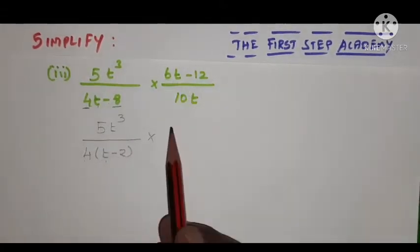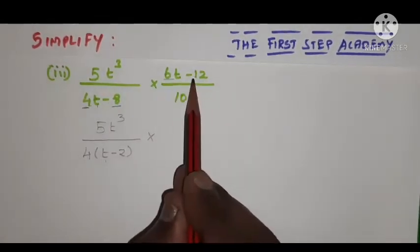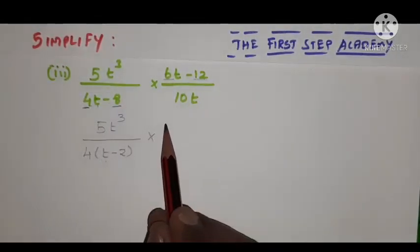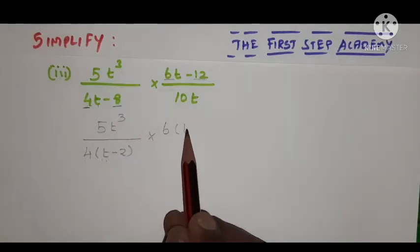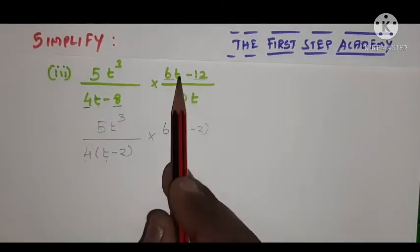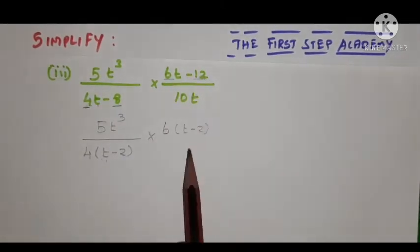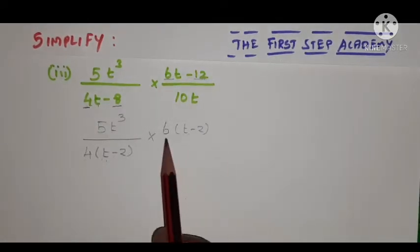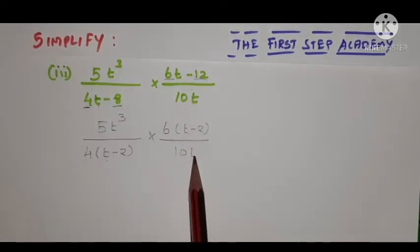Same way, look at the numerator, 6t minus 12. 6 is common in these two terms, so I'm factoring out 6, leaving t minus 2. So I'm writing 6(t - 2) divided by 10t.